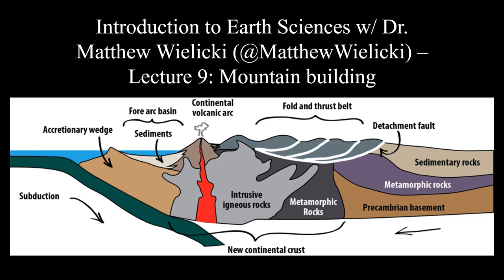Mountain building is intimately related with plate tectonics. The image in front of you shows a continental-ocean convergent plate boundary: the oceanic crust on the left is being subducted under the less dense continental crust on the right. As those two plates come together, magma is formed and a volcanic arc can form, but also the compressional stress causes the crust to thicken vertically and shorten horizontally — and thus we get what we consider mountains.